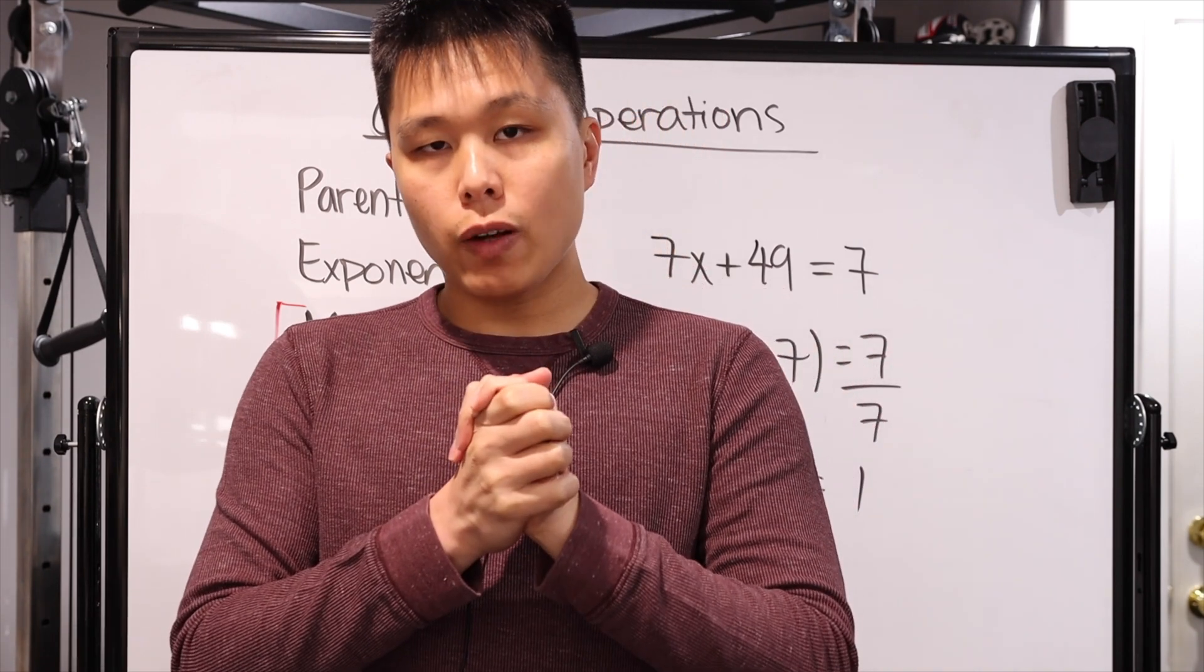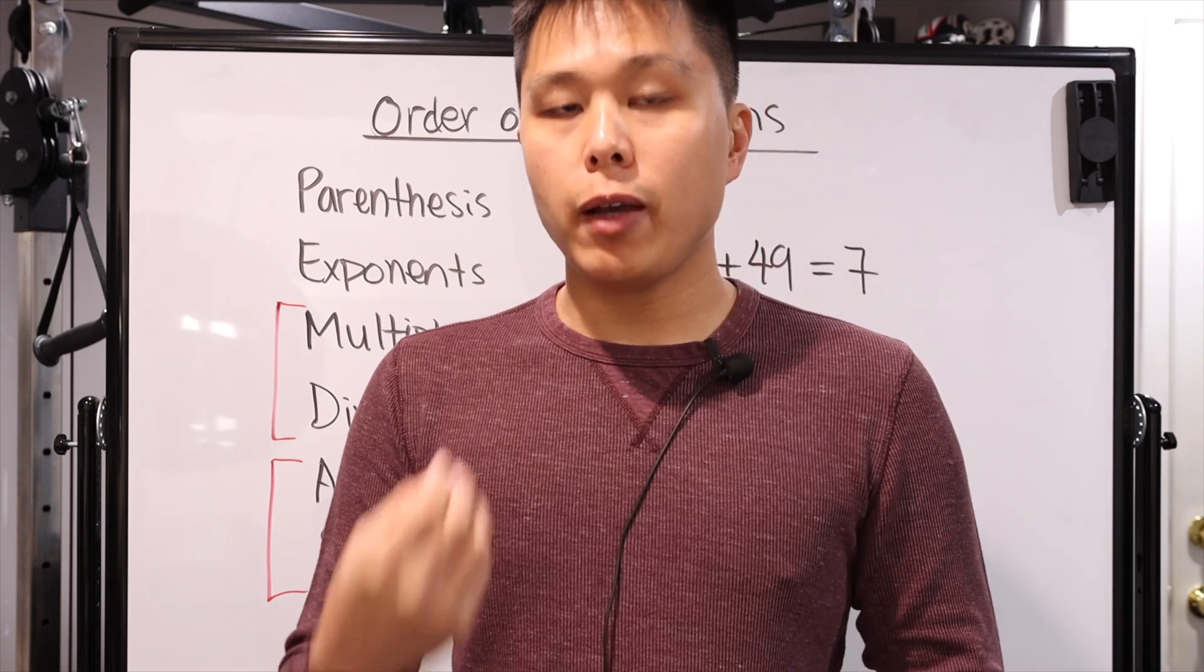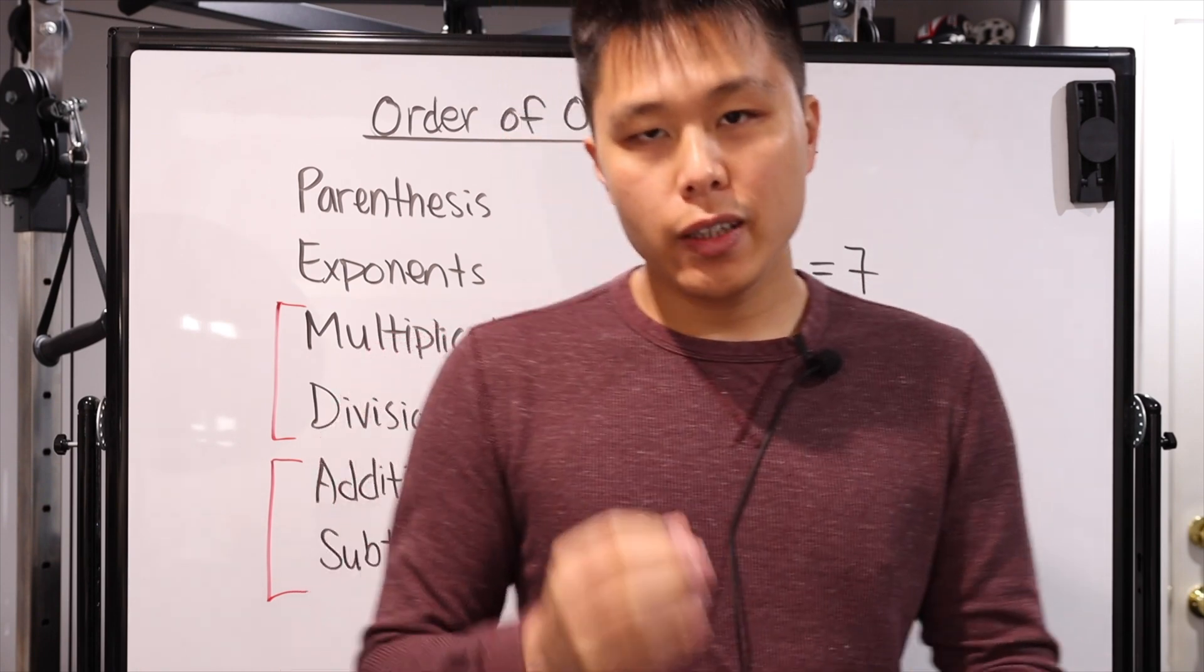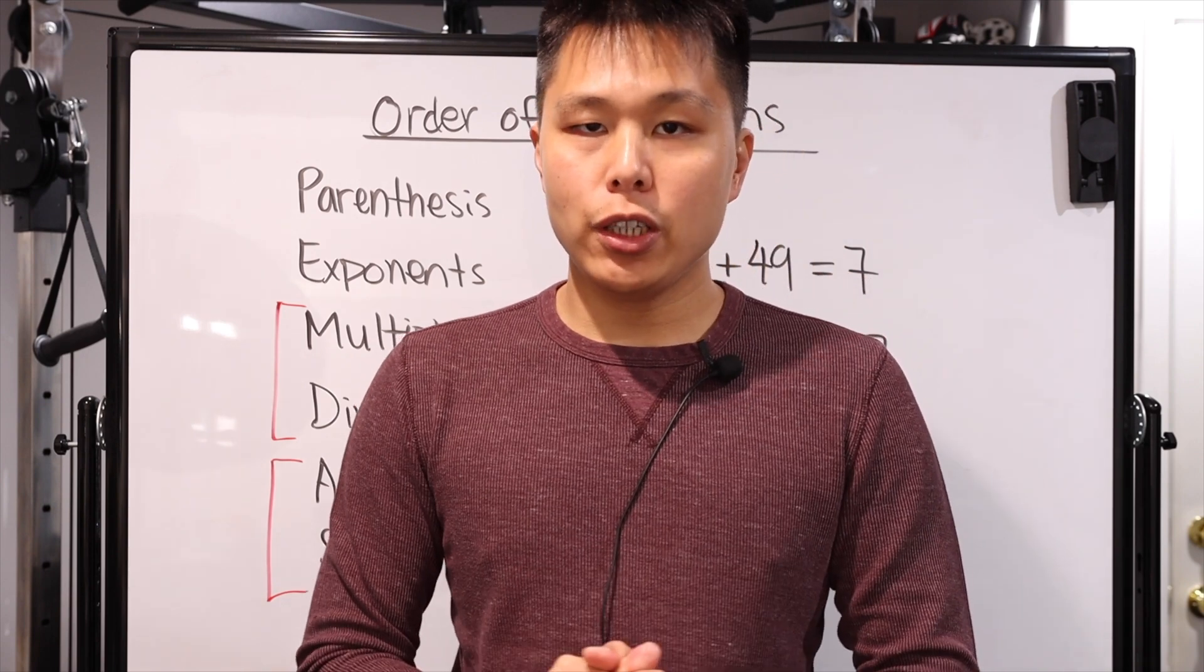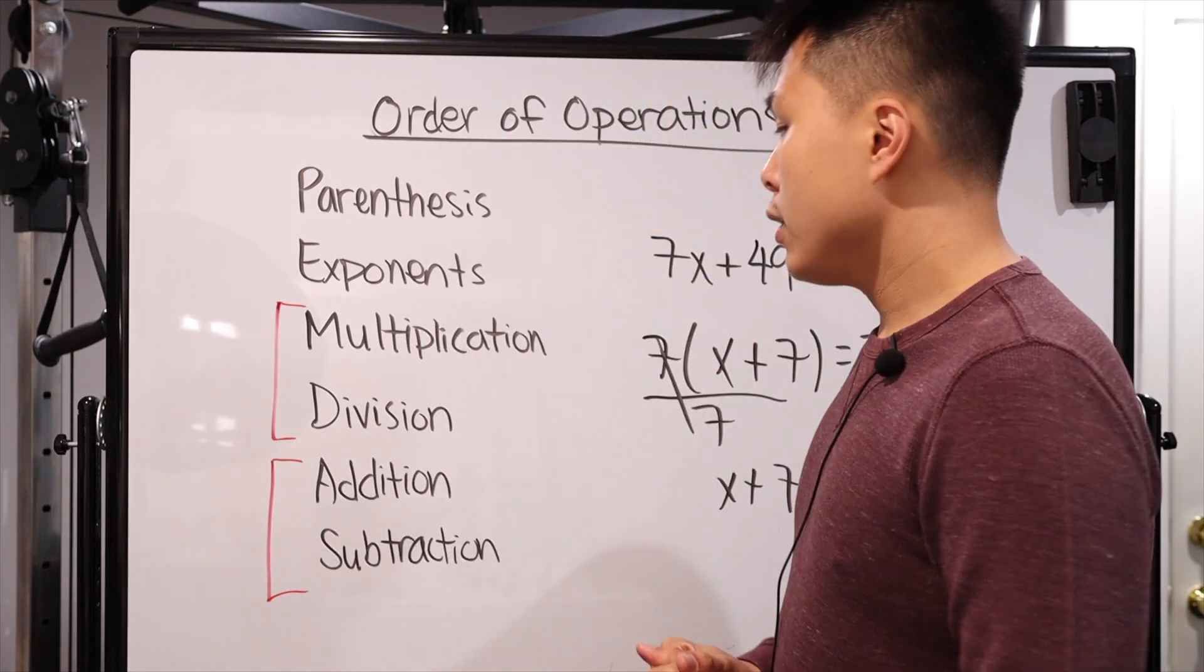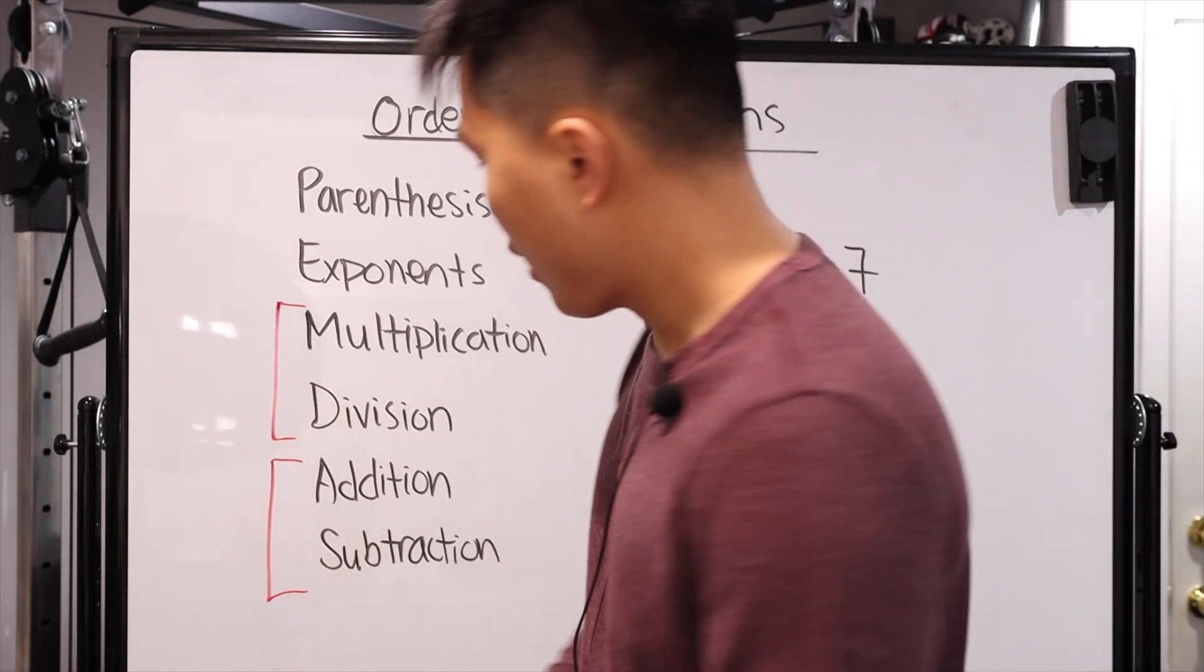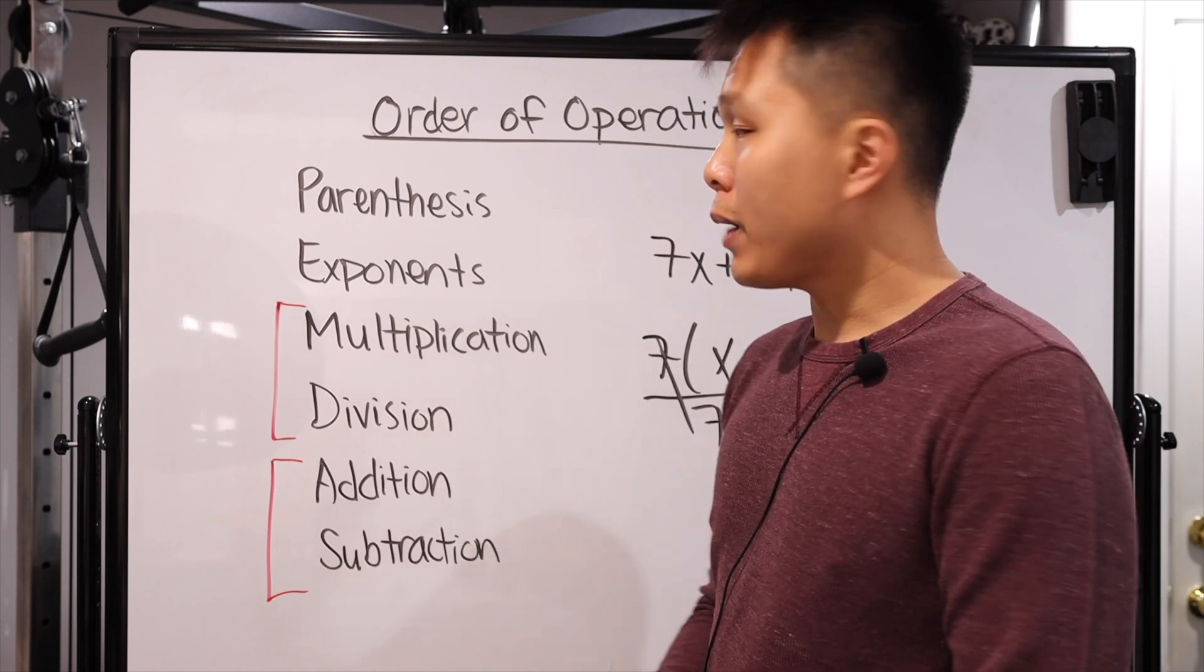All right, so there you have it. This is the order of operations, fairly simple. It is an agreed upon order so that mathematicians, when they're solving problems, are communicating effectively. This is extremely useful for problems that are poorly written, like the second example that I presented you. Fairly simple to remember it, at least in English. I'm sure other languages have their own ways of memorizing it. Please excuse my dear Aunt Sally.